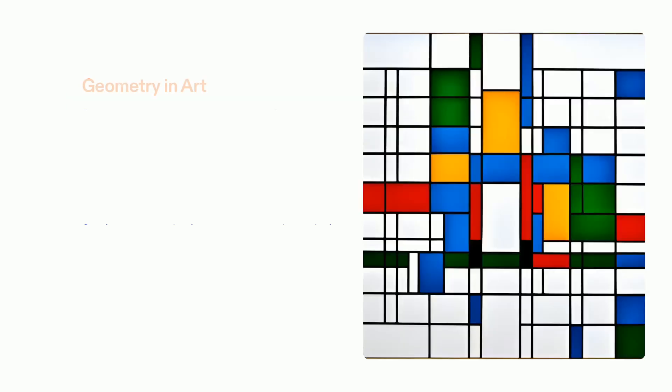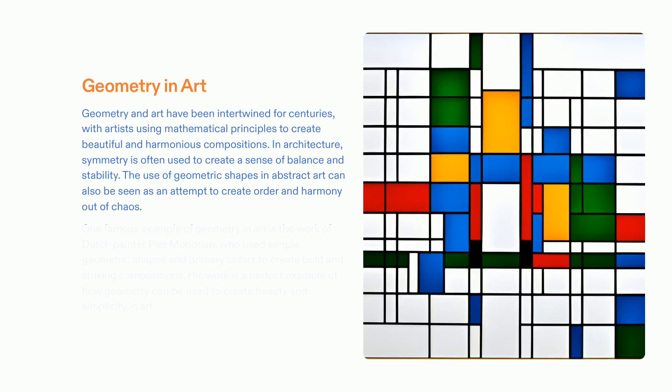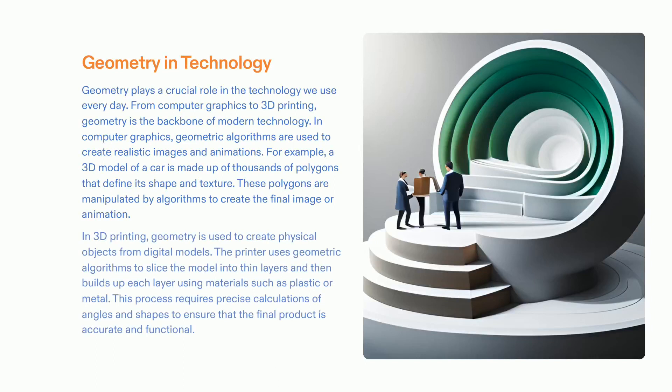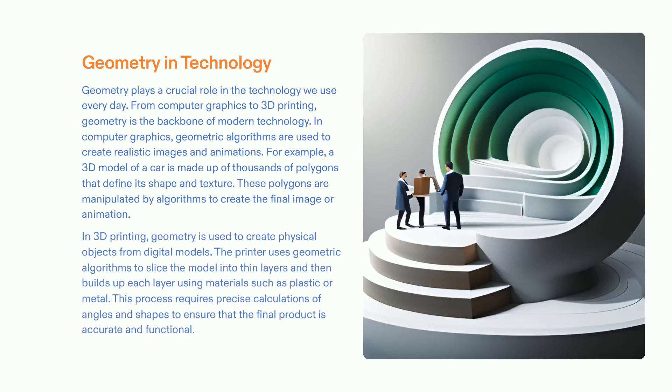Geometry has had a long history of use in art, offering an efficient tool for artists to create marvelous pieces of art. Piet Mondrian is a renowned example of an artist who utilizes geometry to create iconic artwork that expresses the calmness of basic shapes and colors. Geometry in art brings forth a forceful and marveling influence that leads us to recognize the complexity of beauty in our environment. Technology that we use daily to create realistic images or animations, or to 3D print physical objects from digital models, relies on geometry.